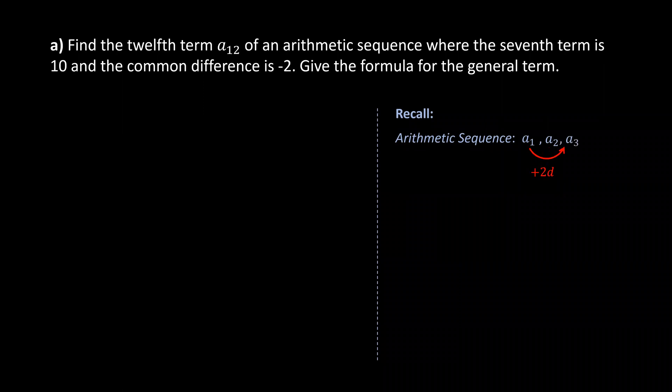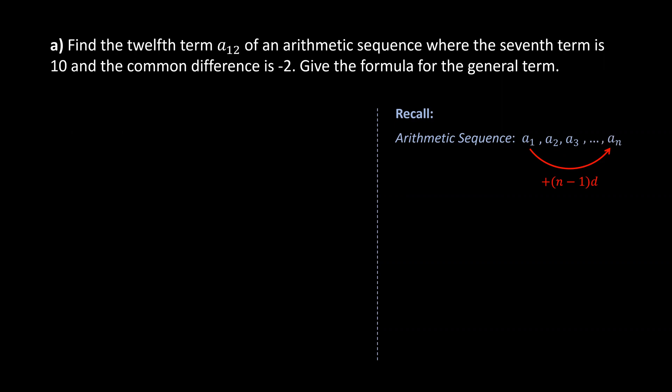And with the same token, we can find the nth term by just multiplying n minus 1 by the common difference and add it to the first term. Now in general, the explicit formula for the nth term for arithmetic sequence is given by a_n equals the first term plus the common difference times n minus 1.